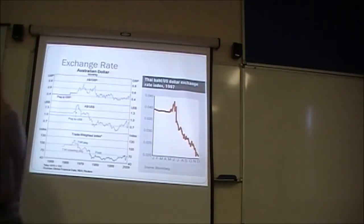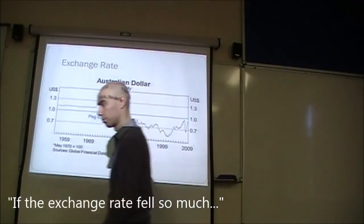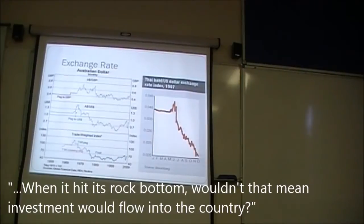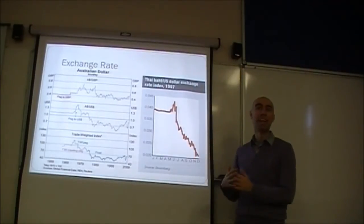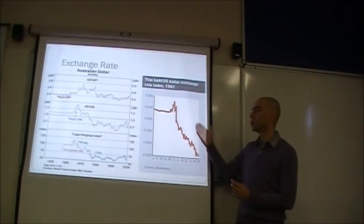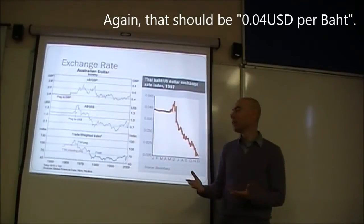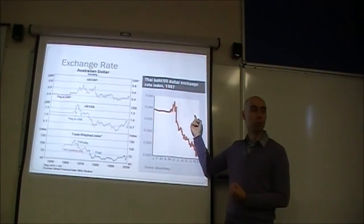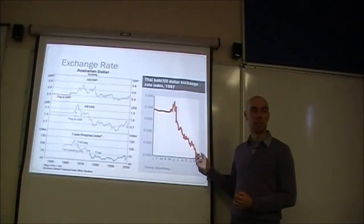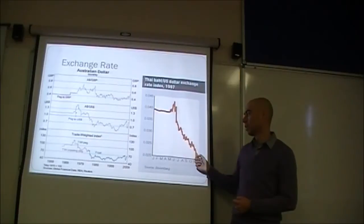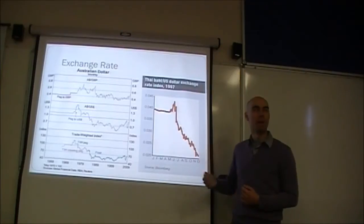But wouldn't that just come to Thailand if the exchange rate fell so much? When it hit its rock bottom, wouldn't that mean investors would just invest in the country? Yes. And that is the reason why, if it falls that low — investors, if you know that the currency is going to go back to 0.04 Thai baht per dollar, and you invest in a business and the value of that business doesn't change, by the time the Thai baht has gone back up to 0.04, you've doubled your investment exactly if you pull it out and put it into US dollars. So it is very profitable as long as it doesn't keep falling. The trouble is if you did it here and it fell another 33%, you've lost a third of your money. So you've got to try and time it until you get it at the bottom.